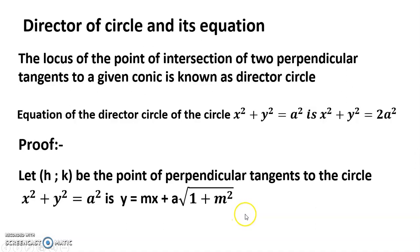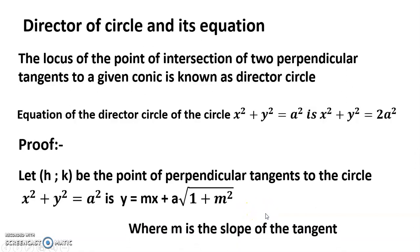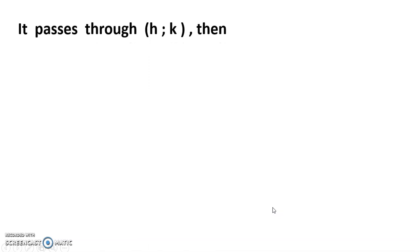Proof: Let (h, k) be the point of intersection of perpendicular tangents to the circle x² + y² = a². The tangent equation is y = mx + a√(1 + m²), where m is the slope of the tangent. Since it passes through (h, k), we substitute accordingly.